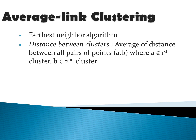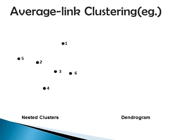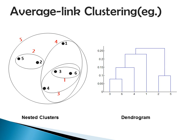The next method is average link clustering, also a farthest neighbor algorithm. Here we consider the average distance between all pairs of points in clusters 1 and 2 — point A belongs to cluster 1 and point B belongs to cluster 2. In the example, data points 3 and 6 are merged to form cluster 1, data points 2 and 5 form cluster 2, data point 4 and cluster 1 form cluster 3, cluster 3 and data point 1 form cluster 4, and finally cluster 4 and cluster 2 form cluster 5. The corresponding dendrogram is shown at the right portion. This is the average link clustering strategy.